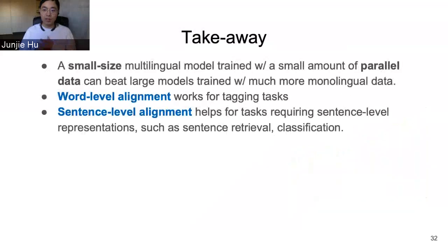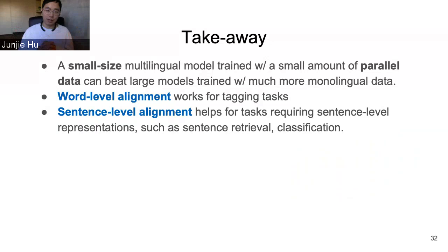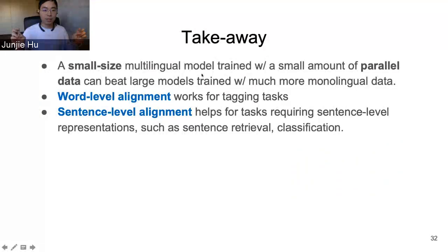The takeaway for this second part is that we proposed two explicit alignment objectives — one focused on word-level alignment and one on sentence-level alignment. We also showed that a smaller multilingual model trained with just a small amount of parallel data can match large models trained with much more monolingual data.